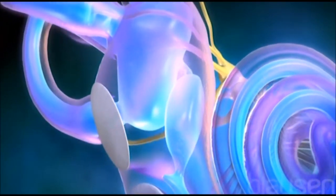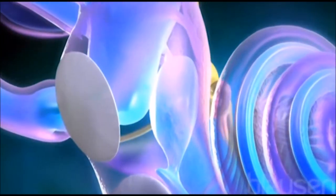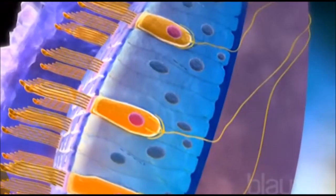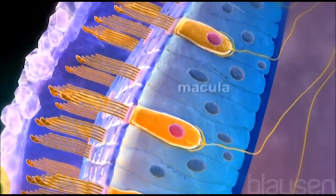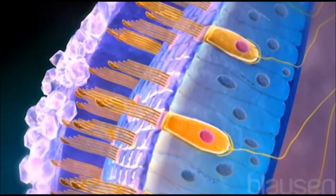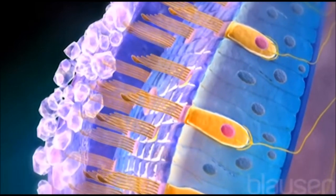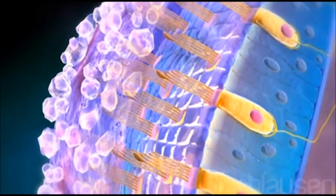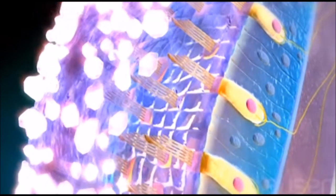Inside the utricle and saccule are hair cells similar to those in the organ of Corti. The hairs are clustered in the macula where their processes are embedded in a gelatinous mass and lie under a thin layer of crystals called otoliths.